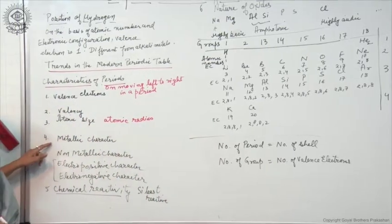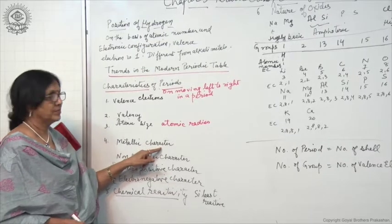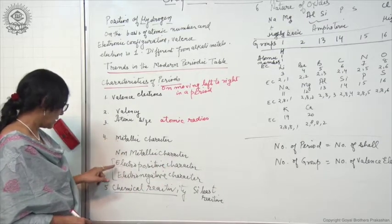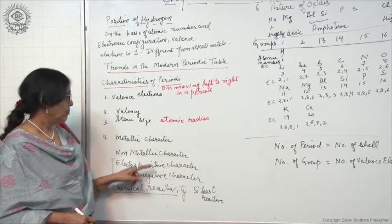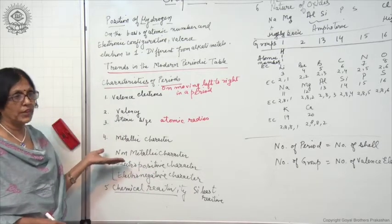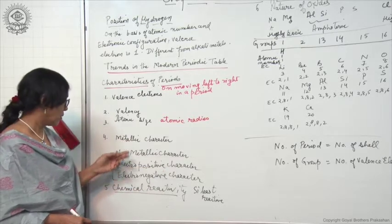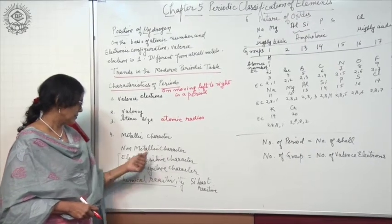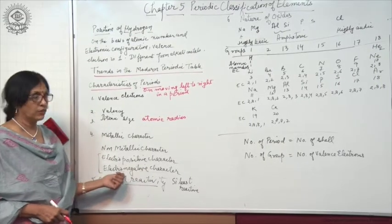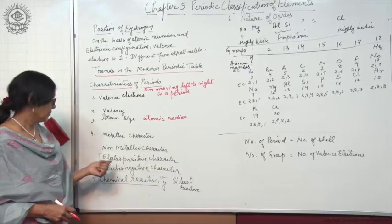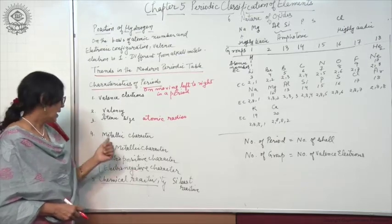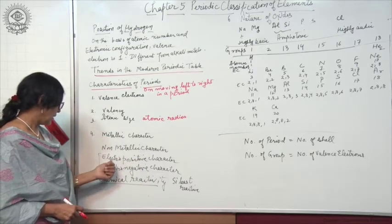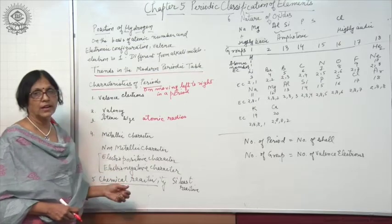Now let us look at metallic character and non-metallic character. Metals are electropositive elements because metals lose electrons readily and form positively charged ions. Non-metallic character is the tendency to gain electrons to form negatively charged ions, so non-metals are electronegative. We can say metallic character and electropositive character are the same, and non-metallic and electronegative character are the same.